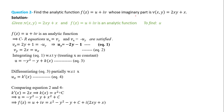Now question 2: the imaginary part v is given and we want to find the real part u. Since f(z) is analytic, CR equations are satisfied. From v_x = 2y + 1, using CR v_x = -u_y, we get u_y = -(2y + 1) = -2y - 1 — equation 1. Then v_y = 2x, and using v_y = u_x gives u_x = 2x — equation 2.